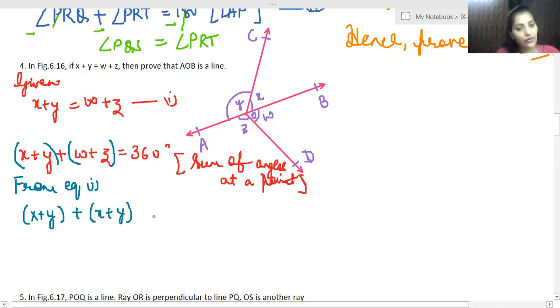Now what does this mean? Two same things, obviously one plus one equals two. So here what will happen? 2 times x plus y is equal to 360 degrees. x plus y is equal to 360 over 2, which comes out to be equal to 180 degrees.